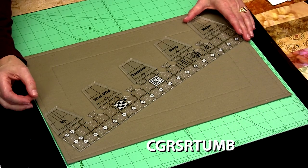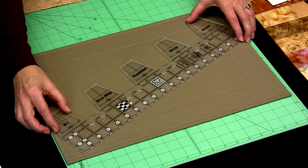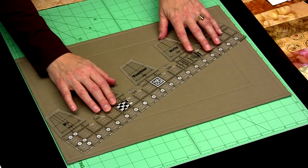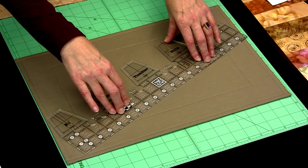As with all Creative Grid rulers, we have the embedded grip on the back that will help hold your ruler still. When you want it to be still, move when you want it to move. When you put pressure on it, that ruler's going to stay.